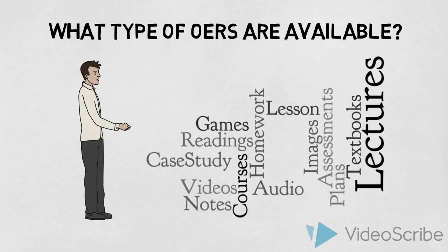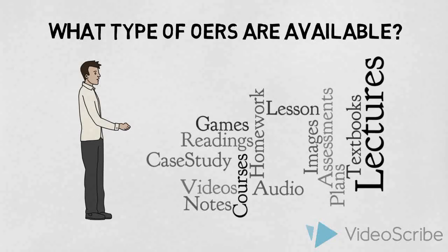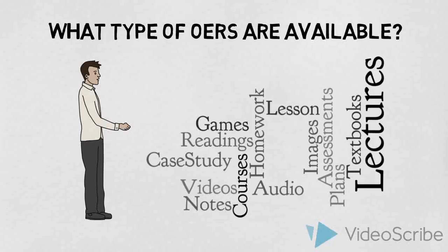What types of OERs are out there and available? Educational resources encompass a lot of things, but they can include syllabi, lesson plans, videos, software, tests, teaching techniques, group activities, writing prompts, textbooks, learning modules, experiments, simulations, and course designs. There are no platform restraints for OERs.